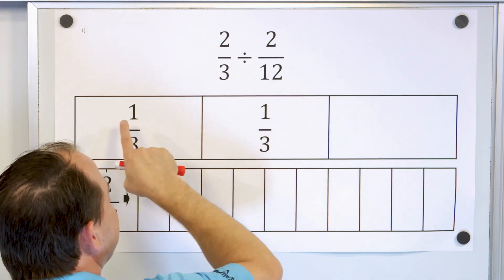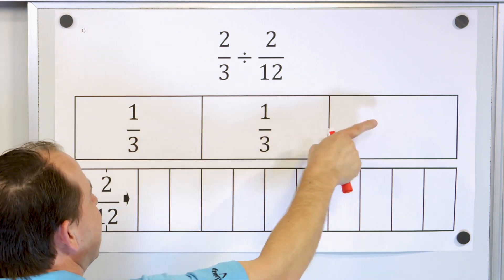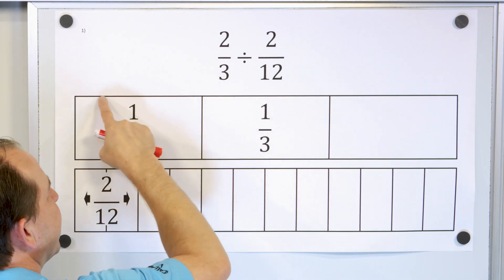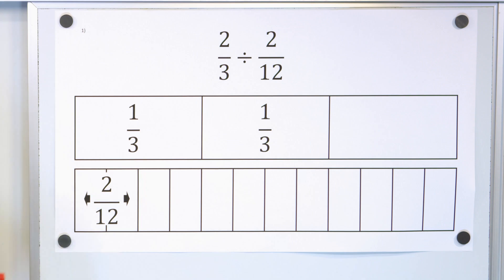There are two pieces out of three, so altogether one-third plus one-third becomes two-thirds.